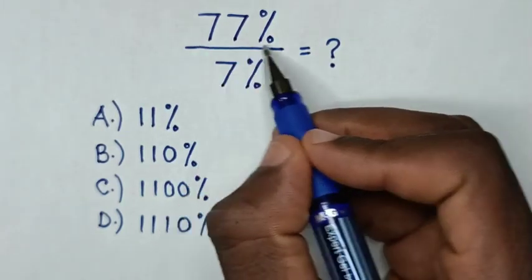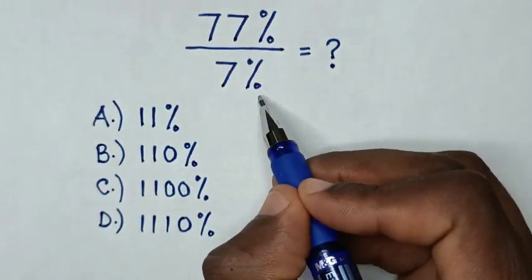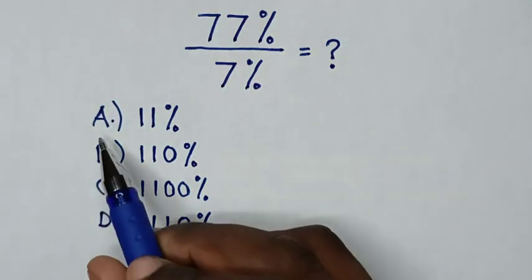Hello, how to solve 77% over 7% by selecting between the answers A,